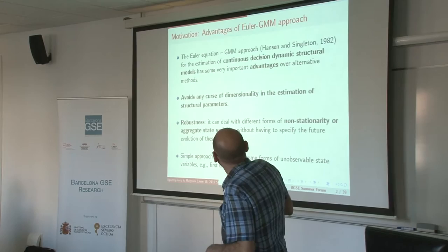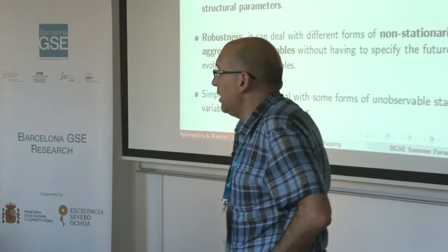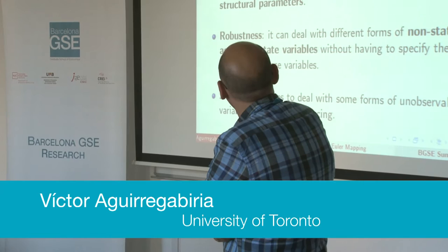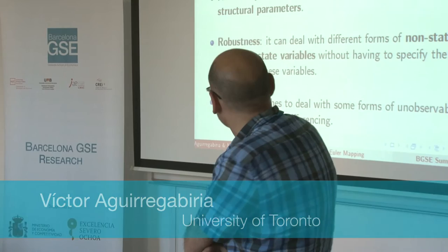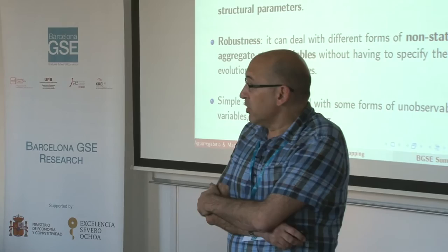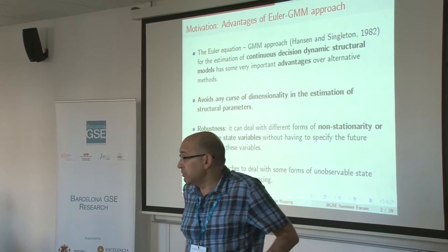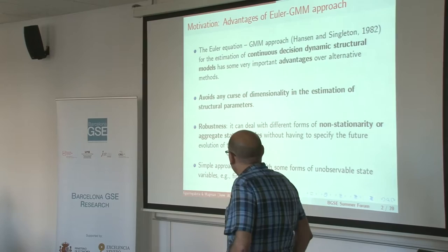This is joint work with Arvind Magesan at University of Calgary. The Euler Equation GMM approach developed by Hansen and Singleton in their seminal paper was one of the key developments in the econometrics of dynamic structural models, and in particular for the estimation of continuous decision structural models. More than 30 years after the publication of this paper, we can still claim that this method has substantial advantages relative to alternative estimation methods in this literature.